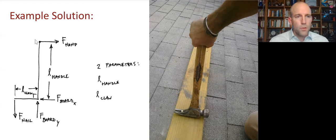If we're thinking about this claw hammer being used to pull a nail out of the board, we're going to have a moment from the hand, and have a moment from the nail. So we just need these two parameters, the length of the handle and the length of the claw. So our simplest model here could be two lines, one representing the handle, one the claw with two parameters, those lengths.